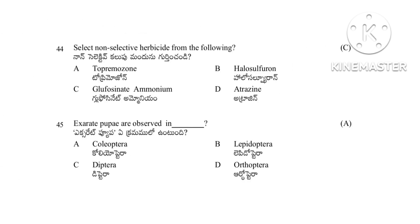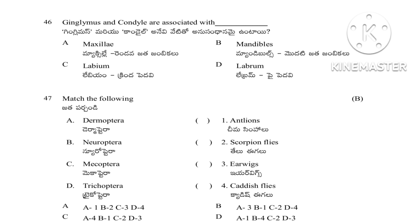Question 43: Non-selective herbicide — Topramezone, Halosulfuron, Glufosinate ammonium, or Atrazine. The answer is Glufosinate ammonium, a non-selective herbicide. Question 44: Exarate pupae are absorbed by — Coleopterans, Lepidopterans, Dipterans, or Orthopterans. The answer is Coleopterans. In Lepidopterans, obtect pupae occur; in Dipterans, coarctate pupae occur; Orthopterans do not have pupae. Question 45: Ginglimus and condyles are associated with — maxilla, mandible, labium, or labrum. The answer is mandible. Question 46: Match — Dermoptera: earwig, Neuroptera: antlions, Mecoptera: scorpion flies, Trichoptera: caddisflies. The correct answer is B.